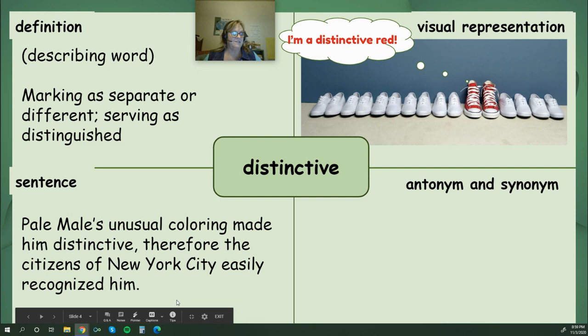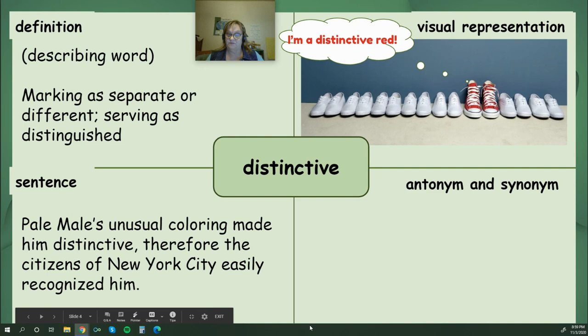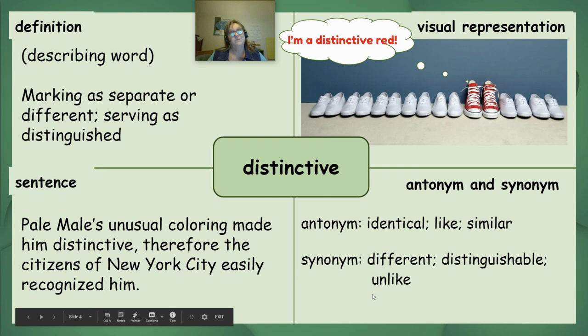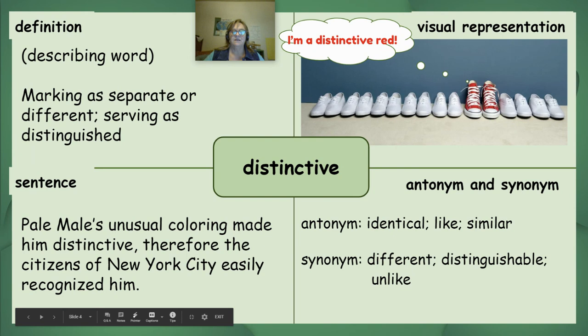Notice this sentence: 'Pale Male's unusual coloring made him distinctive; therefore, the citizens of New York City easily recognized him.' An antonym is a word that means the opposite, so antonyms for 'distinctive' would be identical, like, or similar. A synonym — a word with a similar meaning — would be different, distinguishable, or even unlike.